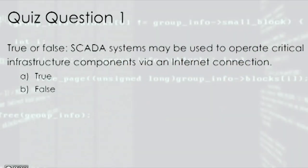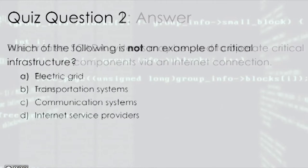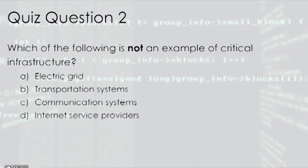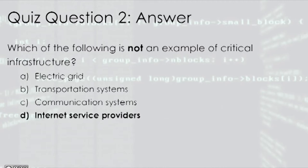Quiz Question 1 — True or False: SCADA systems can be used to operate critical infrastructure components. Quiz Question 2 — Which of the following is not an example of critical infrastructure? A) Electric grid, B) Transportation systems, C) Communication systems, D) Internet service providers. The answer is D: Internet service providers.